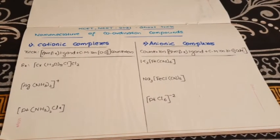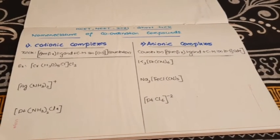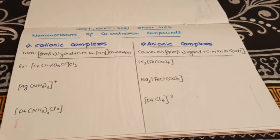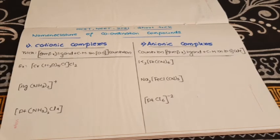Welcome to my YouTube channel. This video is about a shortcut trick to nomenclate coordination compounds. In your theory exam, even in Karnataka CET and NEET exam, there will be a question where you need to name any coordination compound that is given. If you understand this simple trick, you can nomenclate cationic as well as anionic complexes.